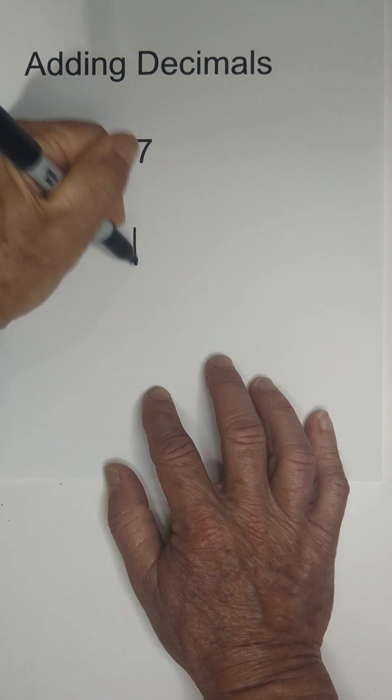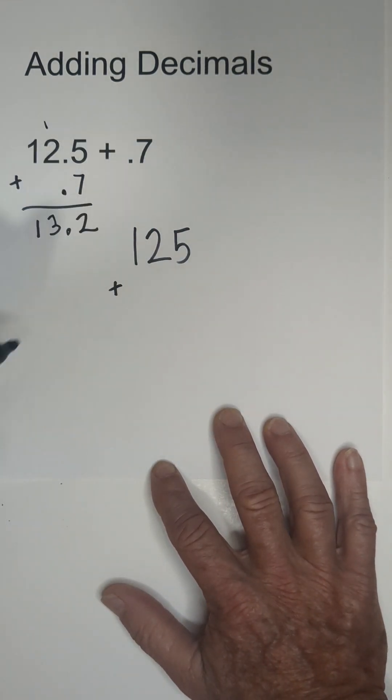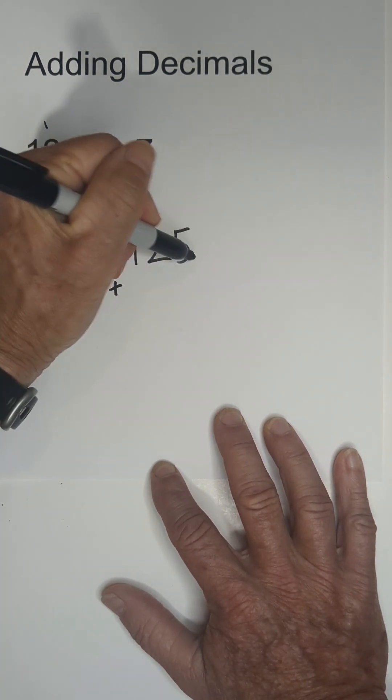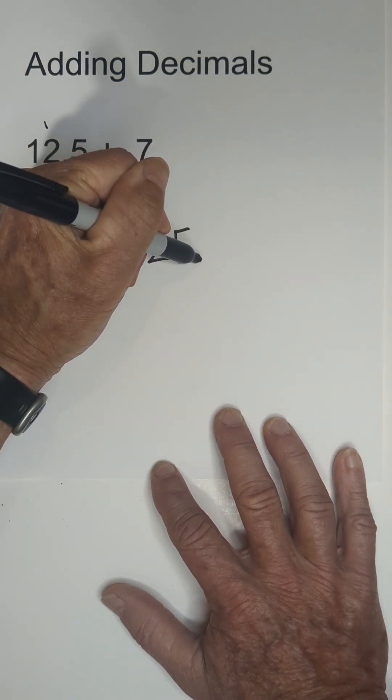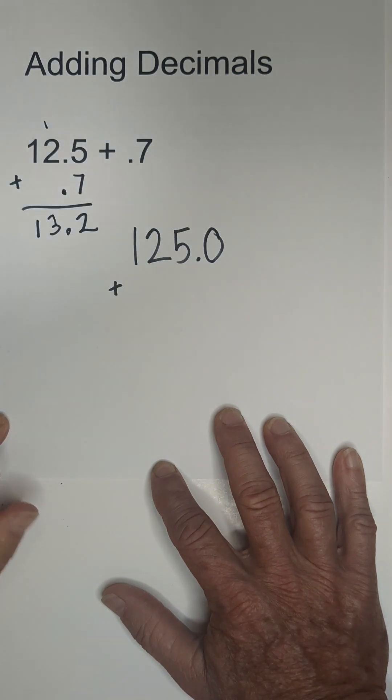Now, what if it looked like this instead? You had 125 plus 0.7. Always assume that the decimal is on the right if you don't see it. And you can add placeholder zeros.